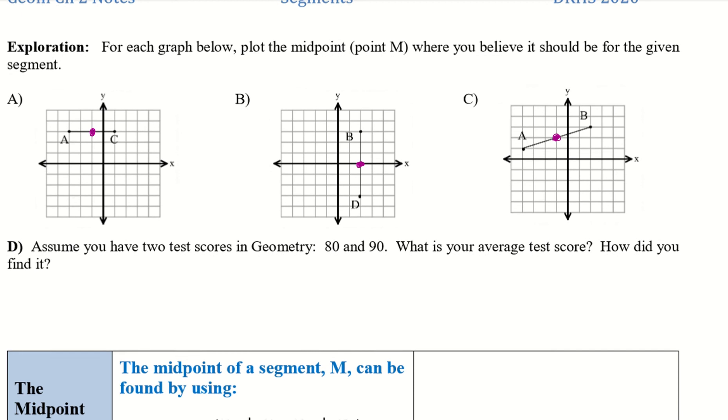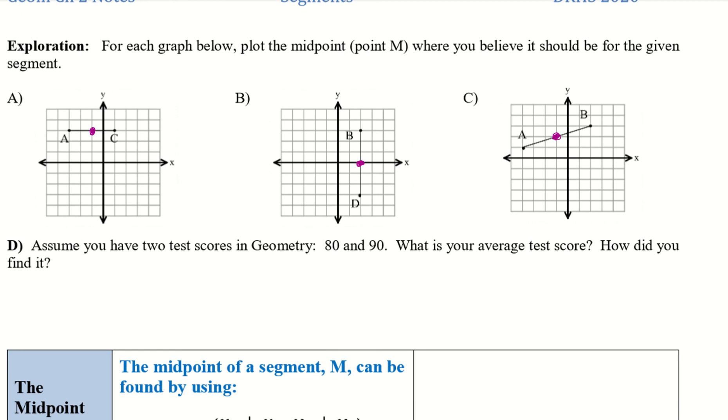So assume you have two test scores in geometry, 80 and 90. What is your average test score and how did you figure that out? So I got 85. And that is because it's in the middle. So very similarly with these lines, I found the point that was in the middle to find the midpoint. So the average score between 80 and 90 is in the middle of 80 and 90. So therefore 85.